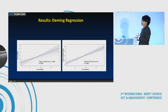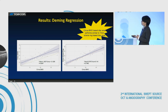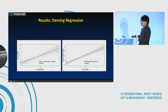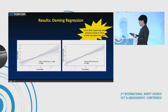Here is the Deming regression. On the left, there is the agreement between Cirrus BMO and Trident BMO, and on the right, there is the agreement between Cirrus BMO and Trident scleral ring. The red dotted line is the identity line. The slope for the left is 1.18 and the slope for the right is 0.98. This result reveals that Cirrus BMO has a better agreement with Trident scleral ring.